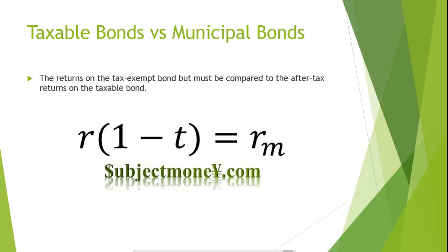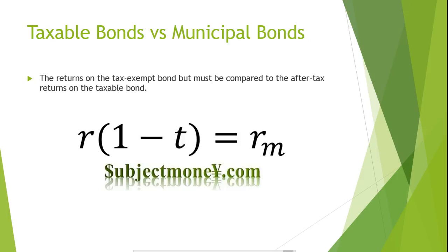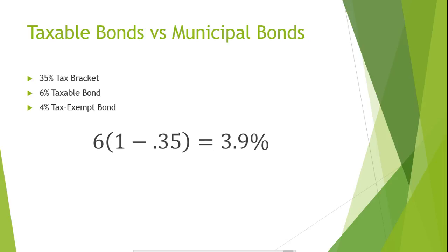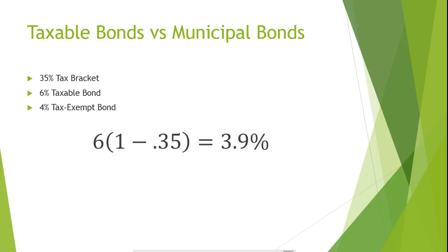Now let's try an example. Suppose your tax bracket is 35%. Would you prefer to earn a 6% taxable return or a 4% non-taxable return? All that we need to do is solve for the after-tax return of the taxable security, using the formula learned in this lesson.